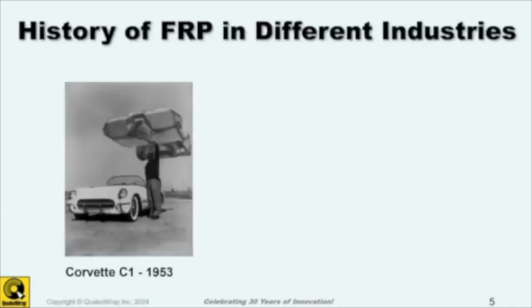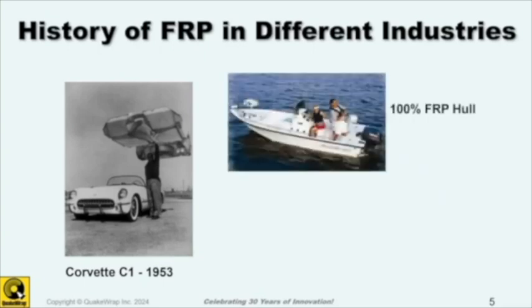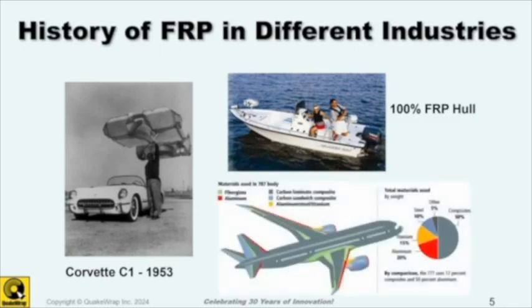FRP products have been used in different industries. In the 50s, Corvette bodies were made with fiberglass. In the marine industry, hulls of boats are made with fiberglass, which is really a lower-quality version of what we do. And the Boeing 787 — everything you see in gray or blue — is either carbon FRP or a sandwich-type construction, which is what we also use. My point is that although civil engineers have not used these materials for many years, they are being used extensively in other industries.